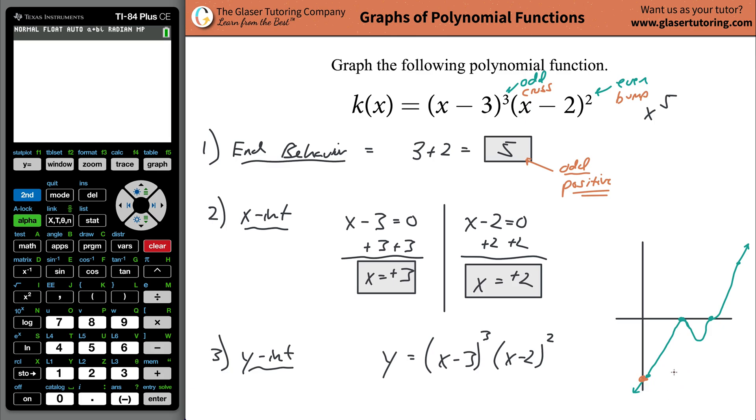Now, you can already tell from the general behavior of this function, what's going to be the sign of that y-intercept? The sign's probably going to be some negative value. So let's see what happens. Y will be equal to (0 - 3)³, and then (0 - 2)².